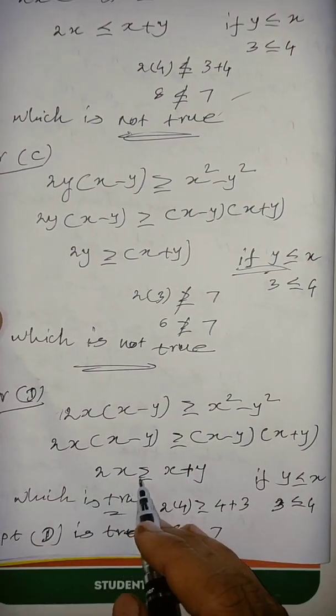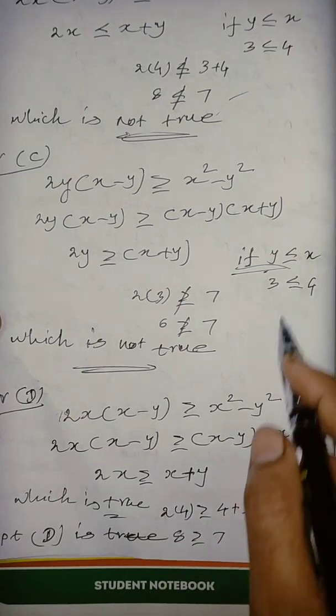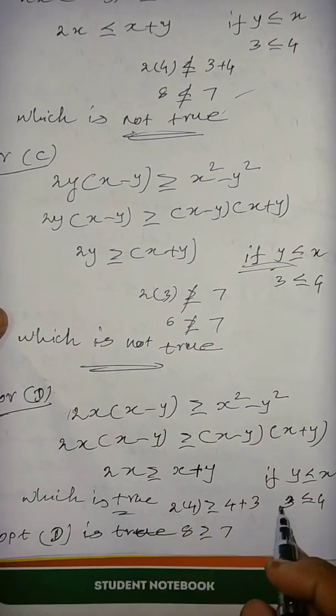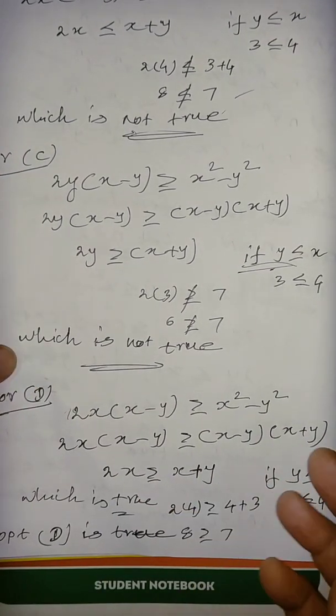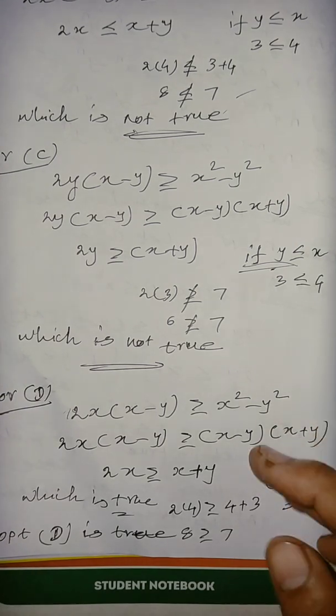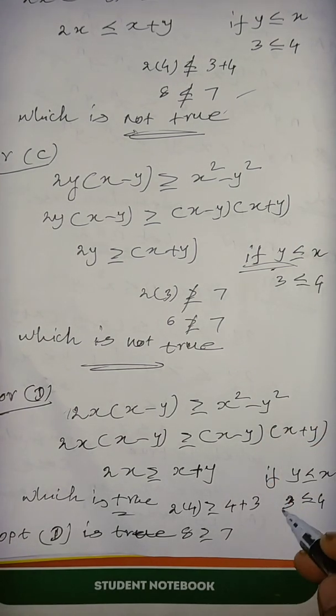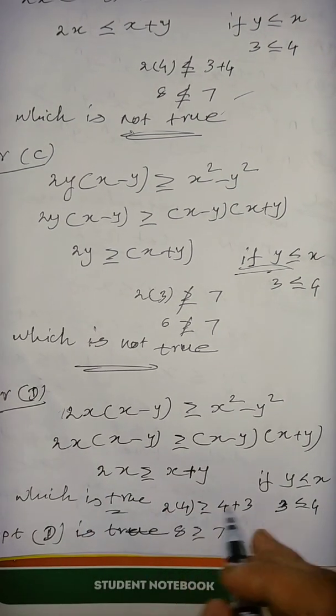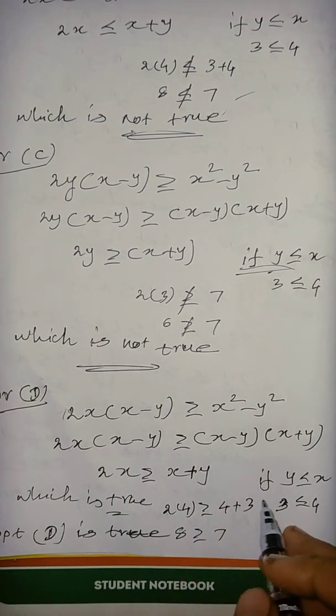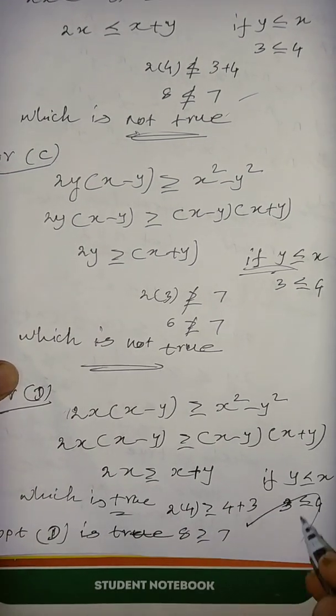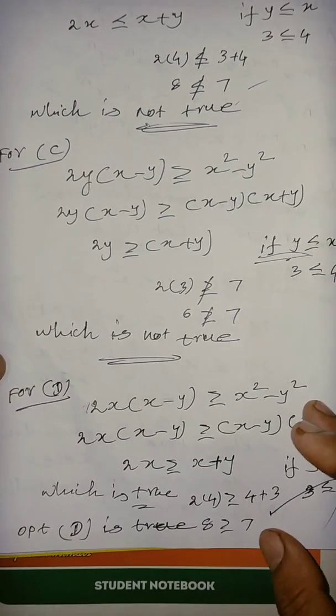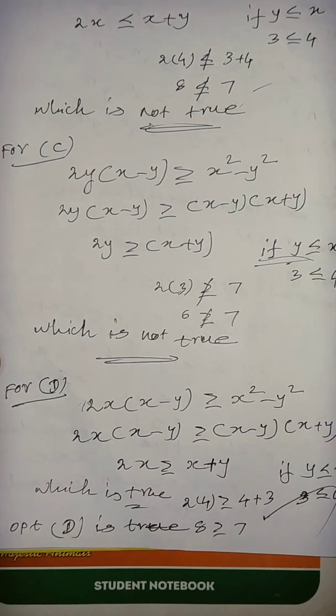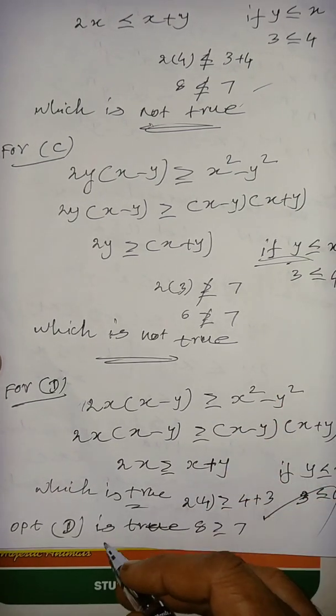So, we are getting 2x greater than or equal to x plus y, the same value I apply here also. So, I am, I am take only on the particular case, then, further you can generalize that one, then, 2 into x, x value 4, 2, 4, so, 8, then, 4 plus 3, 7, this inequality is a, in a particular case, the counter example is correct, so, you can generalize, is it true?